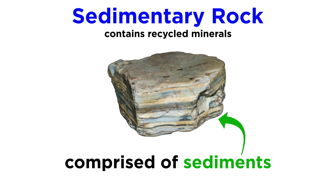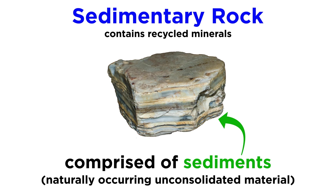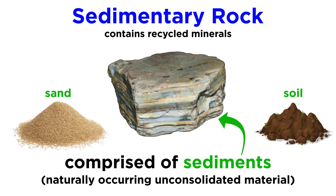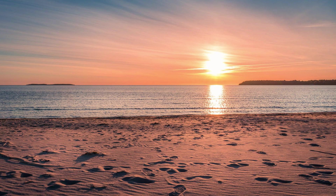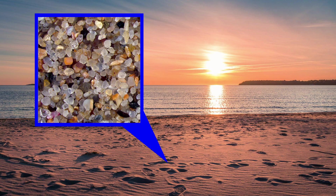Sedimentary rocks are comprised of sediments, sometimes called grains of sediment. Sediments are naturally occurring unconsolidated materials, like sand at the beach or silt in your garden soil. Sedimentary rocks are formed when sediments are compacted and cemented together over time. If you were to look at sand from the beach under a microscope, you would see thousands of individual quartz grains molded into spheroids by thousands of years of waves crashing upon them. This abrasion is part of the recycling process.